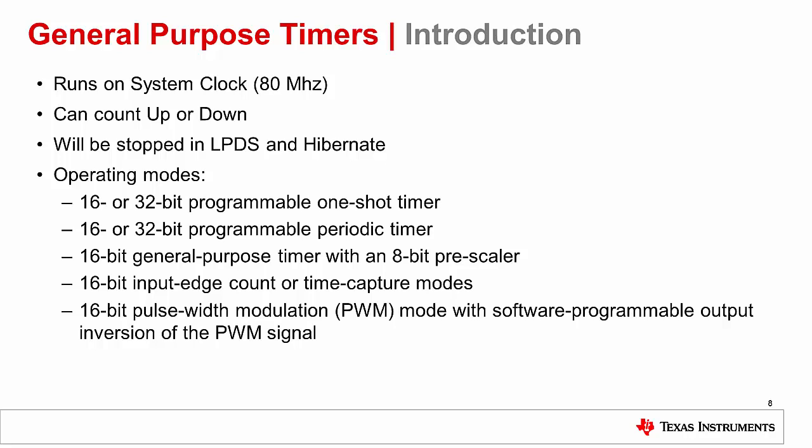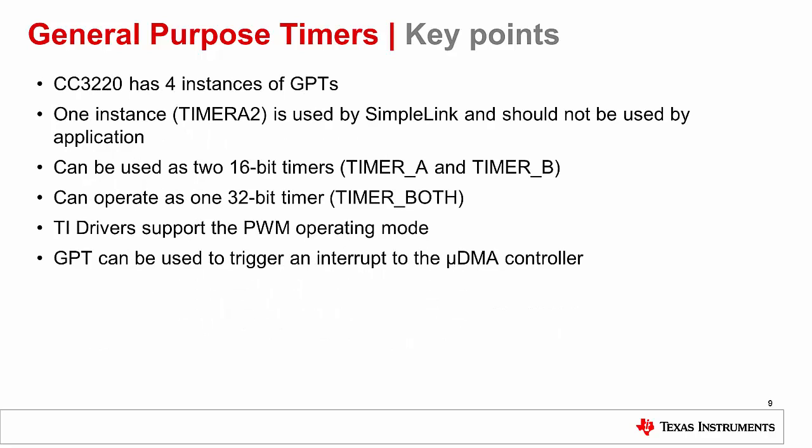In one-shot and periodic mode, the timer can be used in either a 16-bit or 32-bit mode. There are four instances of the General Purpose Timers. You can use a single instance as one 32-bit timer or as two 16-bit timers. TI drivers support the pulse width modulation operation mode. The General Purpose Timer can also be used to trigger an interrupt to the UDMA controller.